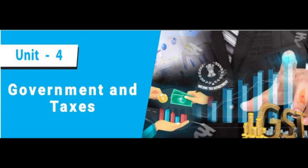The second direct tax is corporation tax — taxes levied on companies, that is payment from one company to another. The third is wealth tax: those who have property want to pay this tax, so property owners pay the wealth tax.